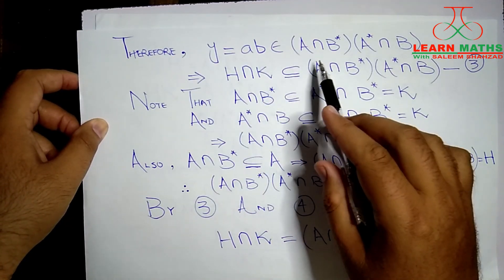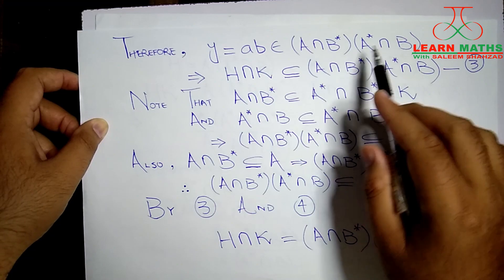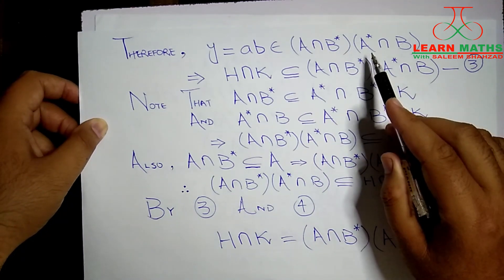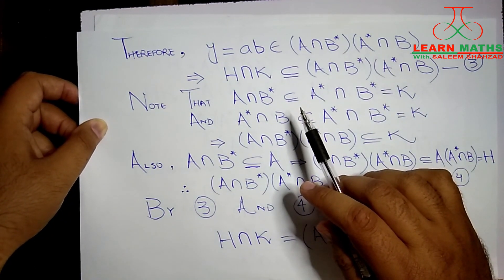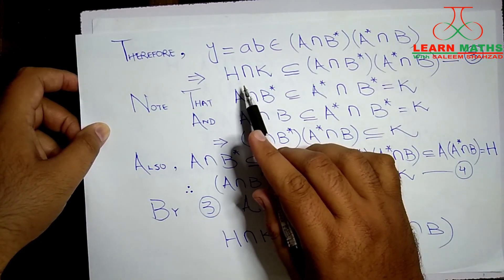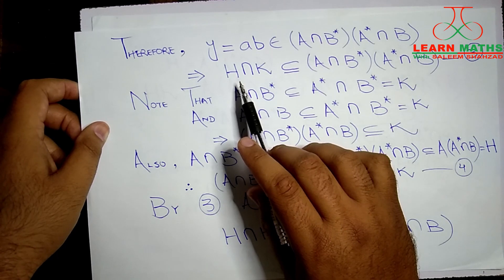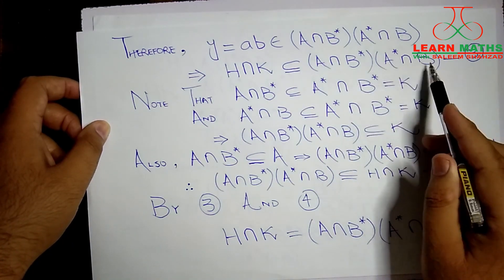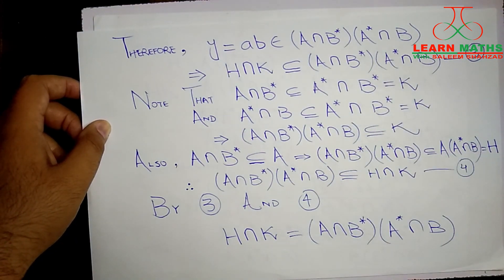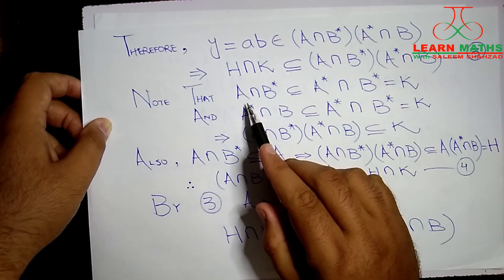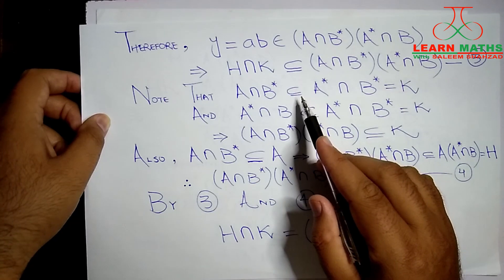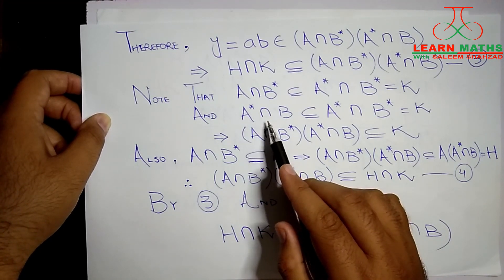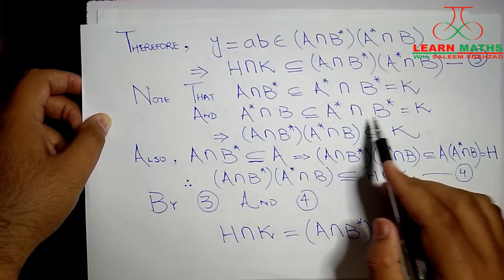If a belongs to A* ∩ B*, then a is in A* as well as B*. We already know a belongs to A, so if it belongs to A and to B*, it will belong to their intersection A ∩ B*. Then Y = ab, where a is in (A ∩ B*) and b is in (A* ∩ B). So we have proved H ∩ K is a subset of (A ∩ B*)·(A* ∩ B). This is Result 3.